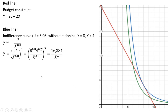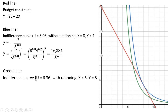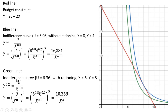The green line is the indifference curve when we have rationing. The consumer is on a lower indifference curve, getting less utility. At X = 6 and Y = 8, utility equals 6.36. To graph this green indifference curve, we take the utility function, solve it for Y at U = 6.36, and raise everything to the power of 5 to get the equation. The consumer ends up at this point, getting 8 units of Good Y and 6 units of Good X.